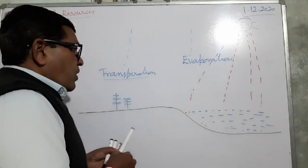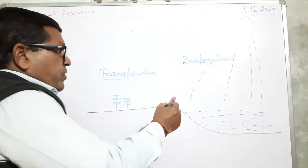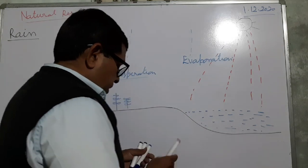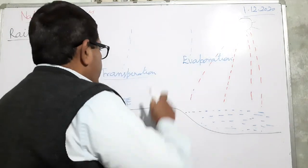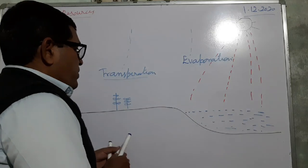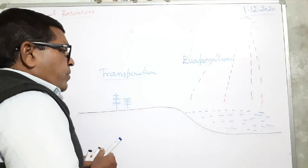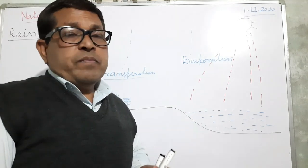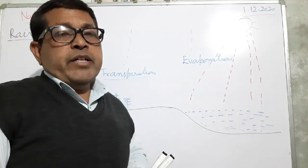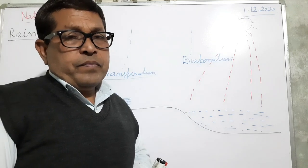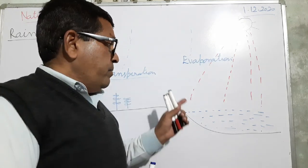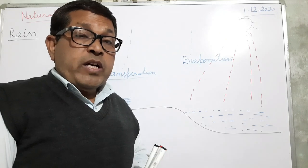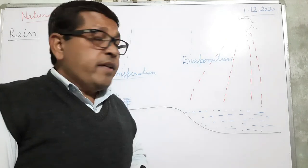So here two processes are involved: one is evaporation, by which water is converted into water vapours, and the other is transpiration. By these two processes, water vapours are added into the air.